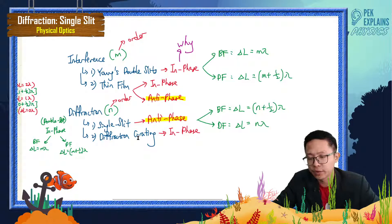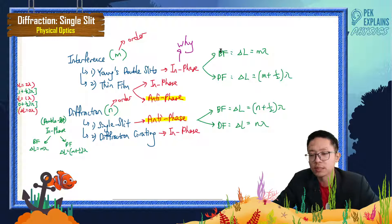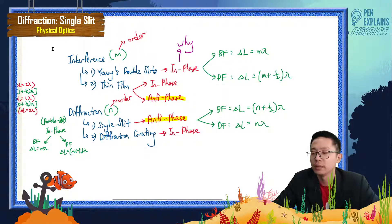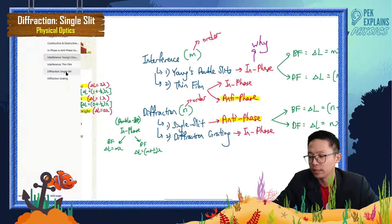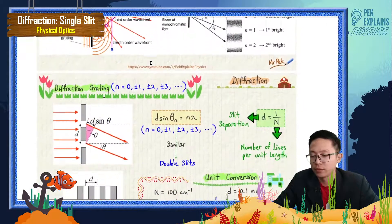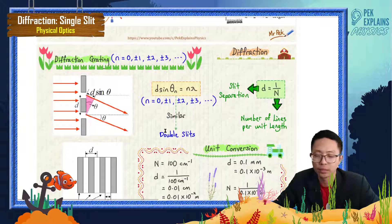Diffraction grating is considered an in-phase source. In-phase source means the bright fringe uses M lambda, and the dark fringe uses M plus half lambda. So actually, diffraction grating in-phase is just like double slit in-phase — it's exactly like double slit. If you look at the formula, it is also similar to double slit: D sin theta equals M lambda.